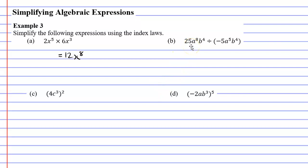Let's now move on to question B. This is a division question, and it's very important for a division question that you write it as a fraction. So 25a to the power of 8, B to the power of 4, over negative 5a to the power of 5, B to the power of 4. I'm going to start by dividing my numbers: 25 divided by negative 5. Now 25 divided by 5 is 5, and because of the negative I'm going to put a negative at the front of it. Now let's focus on our A's.